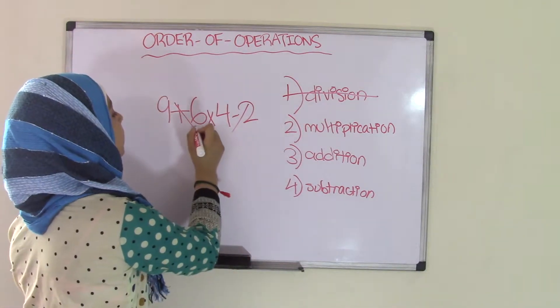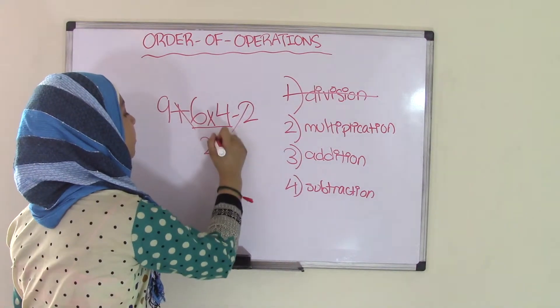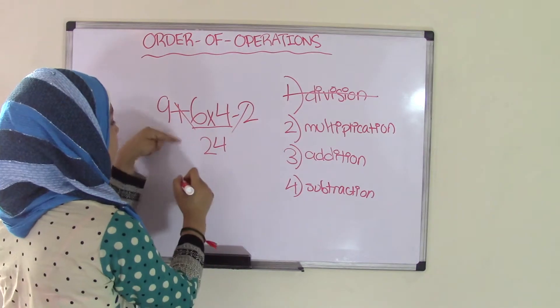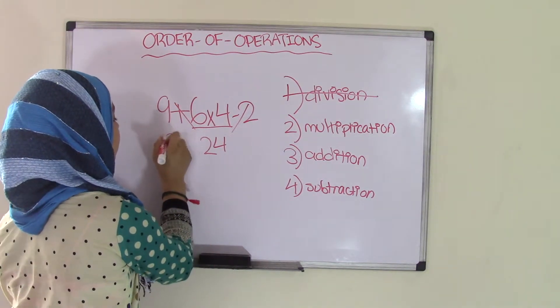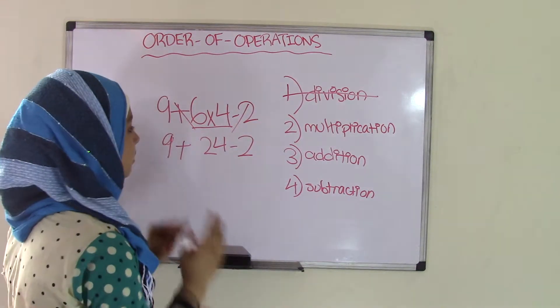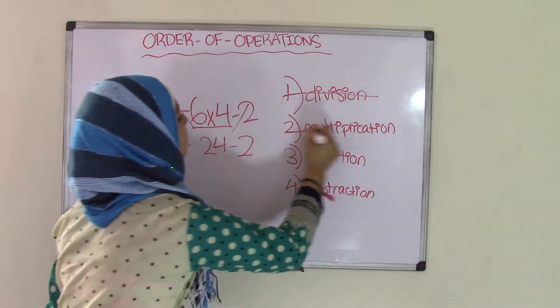So as you can see, we have 6 times 4. What we're going to do is we're going to solve 6 times 4, which equals 24, and then bring the 9 plus and the minus 2 down, straight down. So that becomes 9 plus 24 minus 2. So it was just simplified to 9 plus 24 minus 2. So multiplication is done.